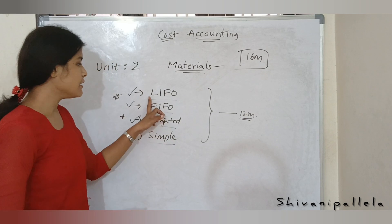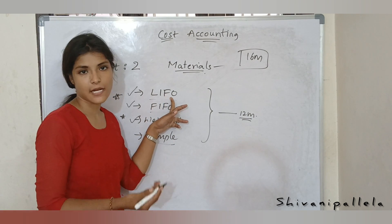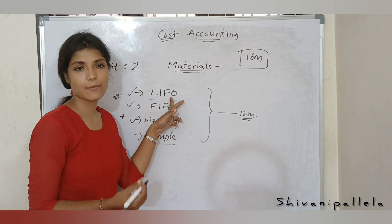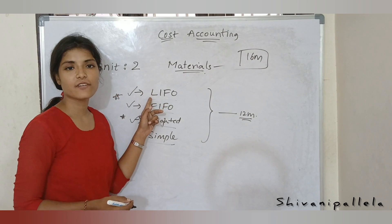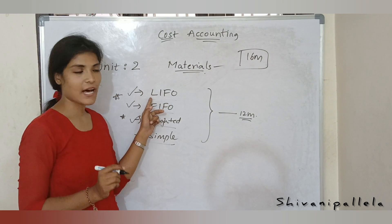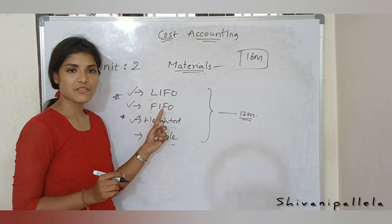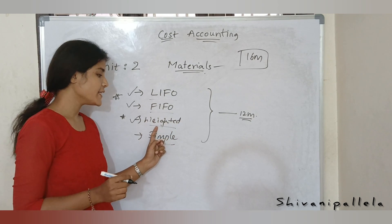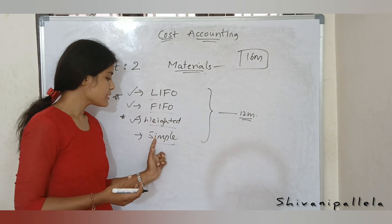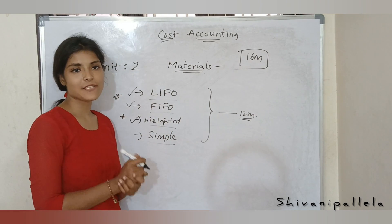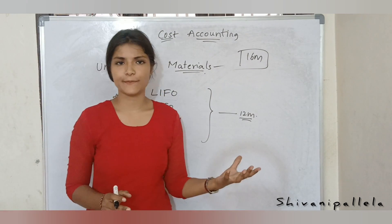LIFO method stands for Last In First Out. FIFO method is First In First Out. Weighted average means we calculate using rates. Simple average means we calculate what the average rate we are having. So what is this unit about?